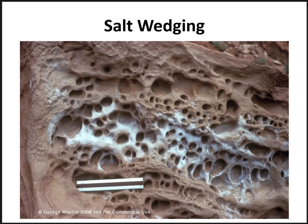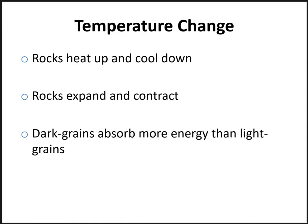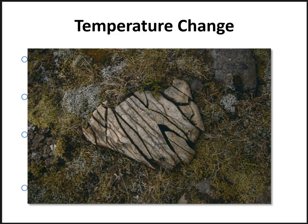Temperature change not accompanied by freeze-thaw cycles also contributes to mechanical weathering. Rocks heat up and cool down, and this change in temperature causes them to expand and contract. This process tends to occur more in dark-colored grains than light-colored grains because dark grains absorb more energy and expand more. As this occurs repeatedly, the rock weakens and eventually breaks apart. This type of mechanical weathering occurs in arid regions and mountain summits where extreme diurnal temperature changes occur.